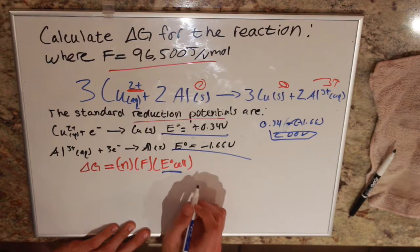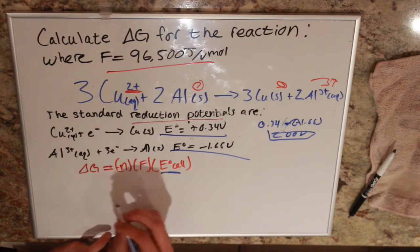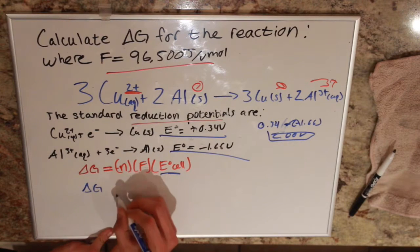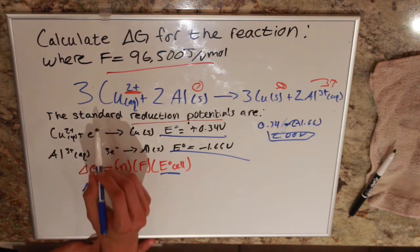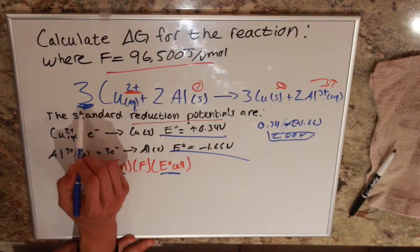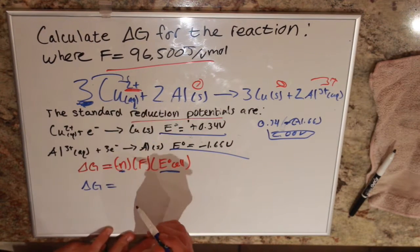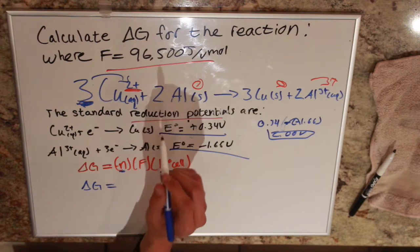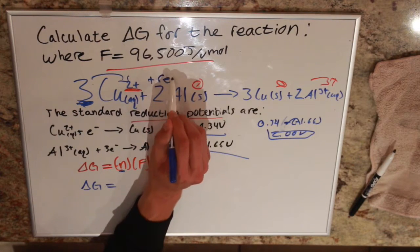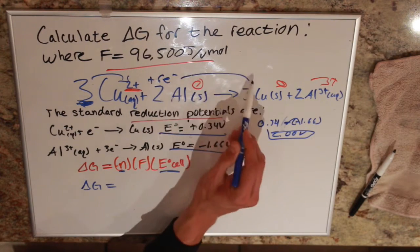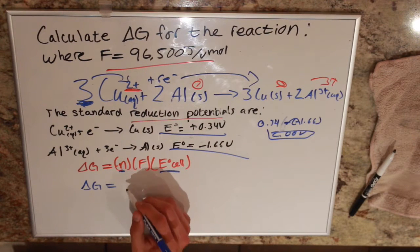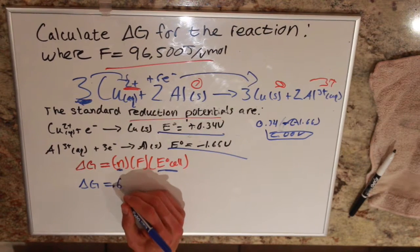Now we have our cell potential, we can plug everything in. Delta G equals, and N is our number of electrons transferred. So we have 3 moles of copper getting multiplied by that 2+, that gives us a 6+. And we have to add 6 electrons to get us to 0. So our electrons transferred is 6.